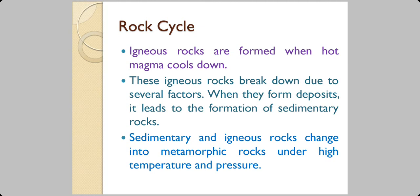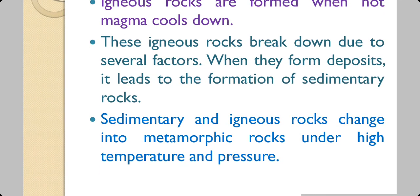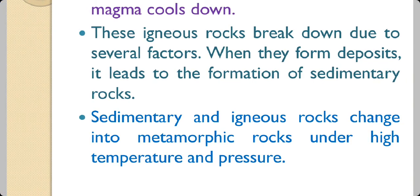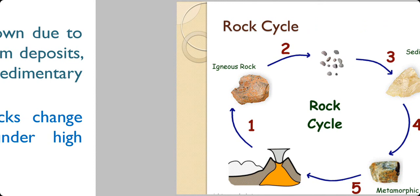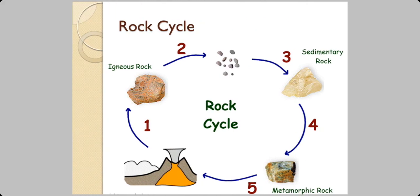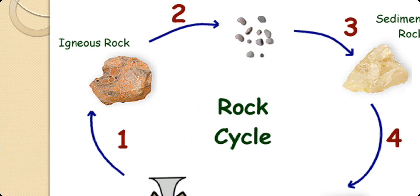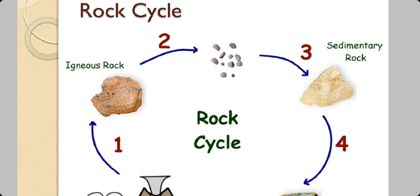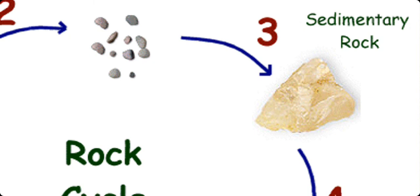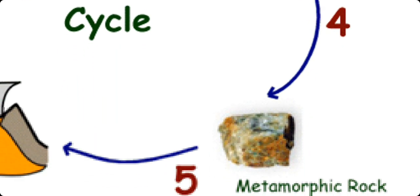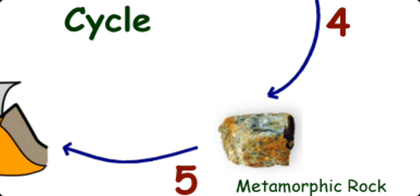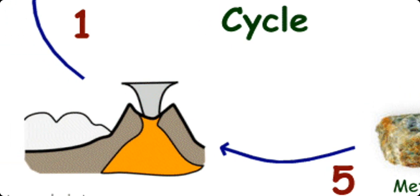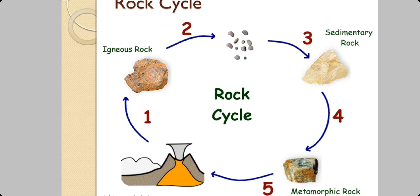Igneous rocks are formed when hot magma cools down. These igneous rocks break down due to several factors. When they form deposits it leads to the formation of sedimentary rock. So here you can see that igneous rock has changed into sedimentary rock. Sedimentary rock and igneous rock both changed into metamorphic rocks under high temperature and high pressure. Here is a diagrammatic representation. You have this igneous rock which breaks down into fragments. And these fragments get deposited by activity of water and convert into sedimentary rock. This sedimentary rock undergoes high pressure and high temperature changing process and it changes into metamorphic rock. They again go back to the mantle where they again change into igneous rock. And this cycle continues.